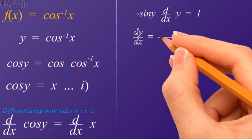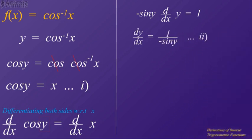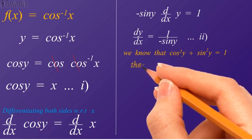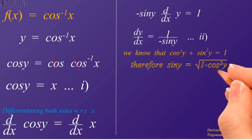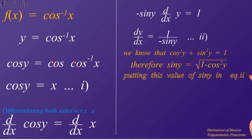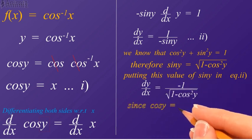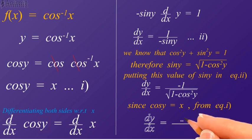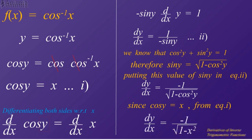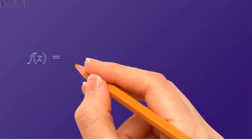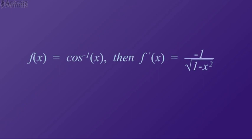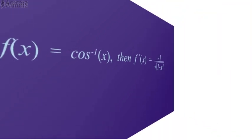Now dividing both sides by minus sine y — or we can say that as minus sine y is in multiplication on the left-hand side, it will be in division on the right-hand side. We know from trigonometric identities that cosine squared plus sine squared is equal to 1. From this identity, sine y is equal to the square root of 1 minus cosine squared y. Putting this value in equation 2, and from equation 1 we know that cosine y is equal to x, therefore replacing cosine squared y by x squared. Hence we got the derivative of cosine inverse x, which is minus 1 divided by the square root of 1 minus x squared. When f(x) is equal to cosine inverse x, then its derivative f′(x) will be equal to minus 1 divided by the square root of 1 minus x squared.